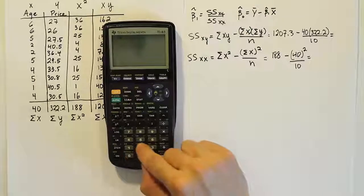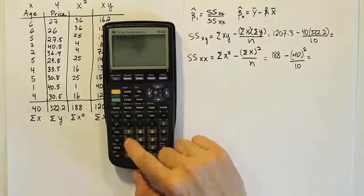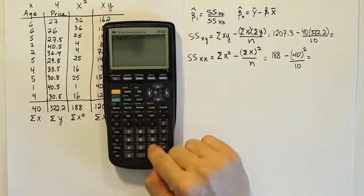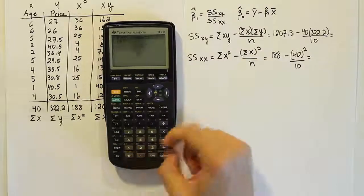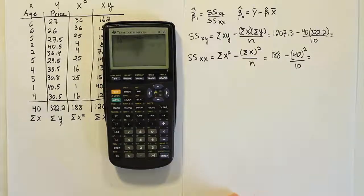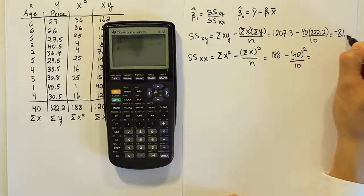Let's work those out now in our calculator and see what we come up with here. So for the first one, it's 1207.3 minus 40 times 322.2 divided by 10. And when you do that, you get negative 81.5.